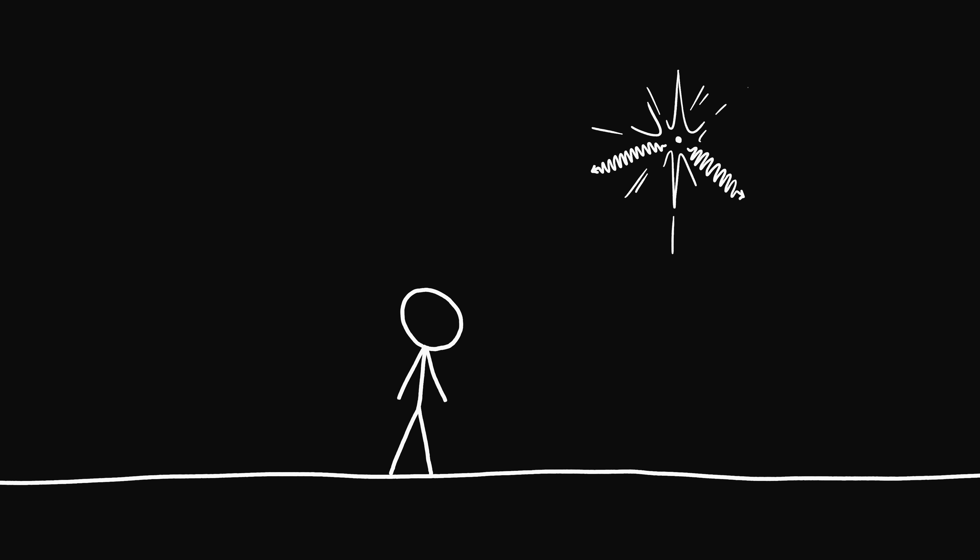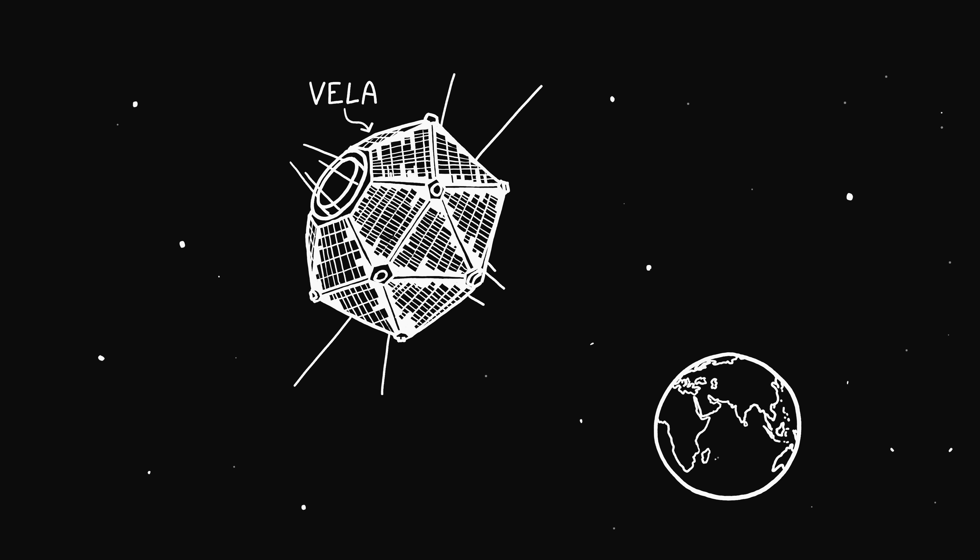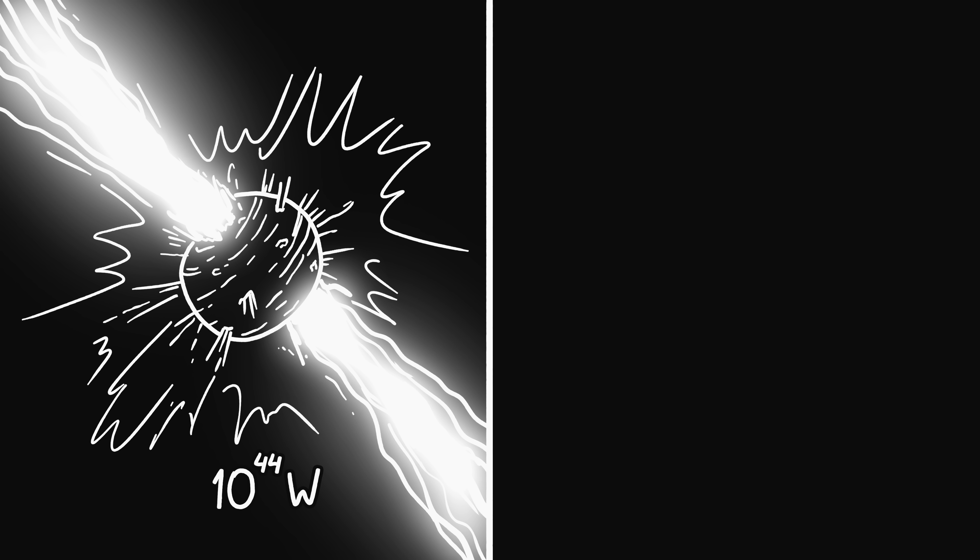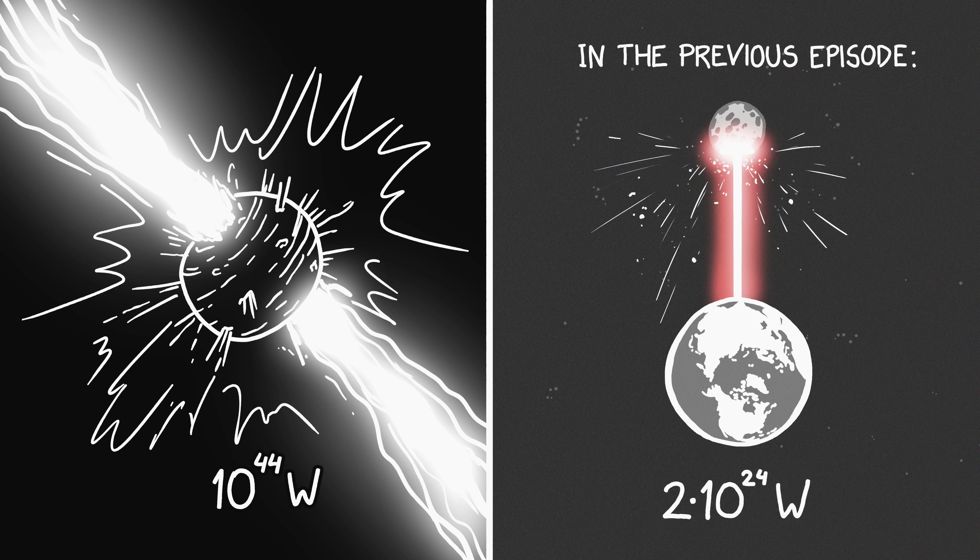We didn't know about gamma ray bursts until we launched a satellite to watch for gamma ray flashes from nuclear explosions on Earth, and we were surprised to see flashes coming from everywhere else in the universe instead. The peak power of beams from gamma ray bursts can be on the order of 10 to the 44 watts, which is much, much more powerful than our laser array.